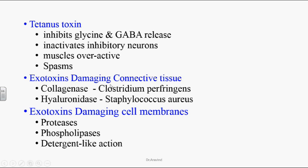Other exotoxins that damage connective tissue include collagenase, secreted by Clostridium perfringens, and hyaluronidase, secreted by Staphylococcus aureus. Exotoxins that damage cell membranes include proteases and phospholipases, which have a detergent-like action — they increase cell permeability, causing loss of fluid and cell destruction. Phospholipases are especially important in Clostridium perfringens, which creates an anaerobic environment that ultimately leads to gas gangrene formation.